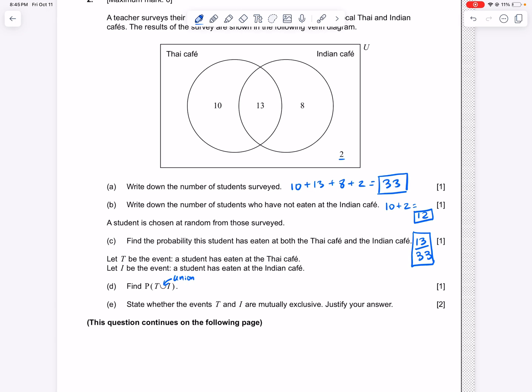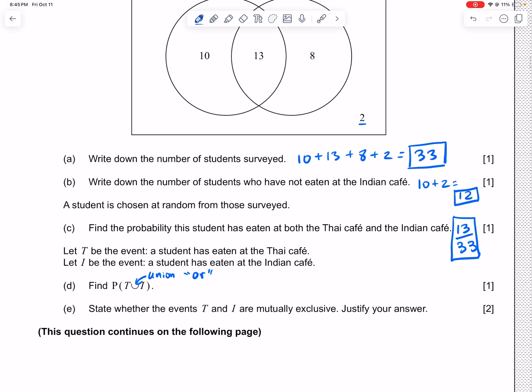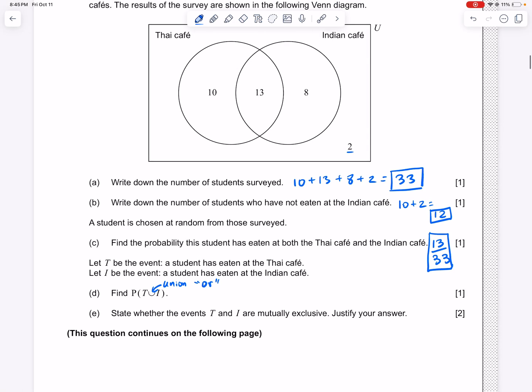So this is saying find the probability that someone has eaten at the Thai Café or the Indian Café. And so I'm going to show you a common error and I want you to avoid this. These 10 people have eaten at the Thai Café only.